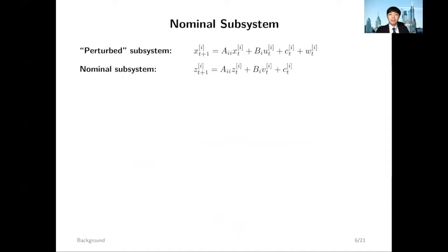Based on this simplified dynamics, we can further introduce the nominal subsystem, which essentially ignores the disturbance term. Next, I will use results from robust control to deal with the effect of the disturbance term.